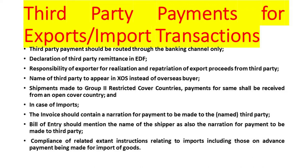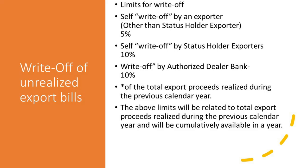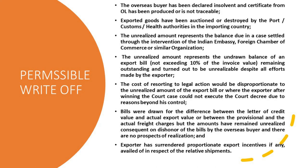Self write-off: write-off can be done in certain situations. Self write-off by an exporter other than a status holder exporter is permitted up to 5% of the export receivables. Self write-off by status holder exporters is permitted up to 10%. Status holder exporters can write off 10% of the export receivables which cannot be realized — meaning 10% of the total export proceeds realized during the previous calendar year.